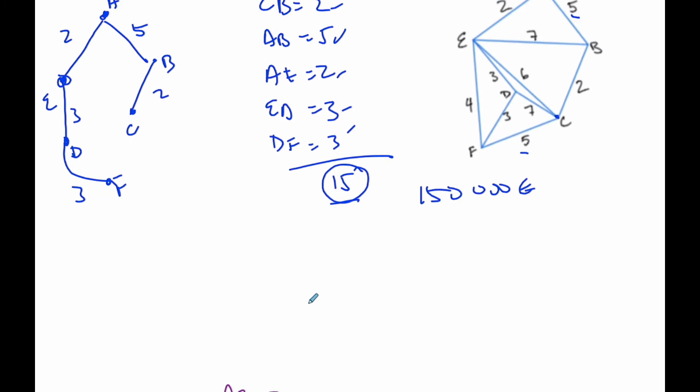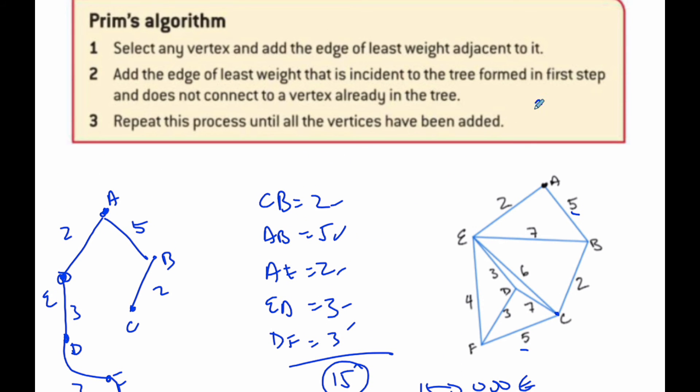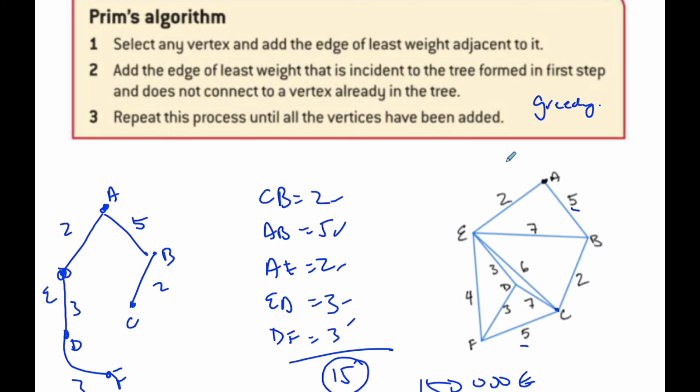And so both these algorithms are what we call greedy. They are greedy algorithms because they always take the best available option. There are other algorithms that exist. One is called Dijkstra's algorithm. But these ones are Prims and Kruskal's, what we're responsible for.